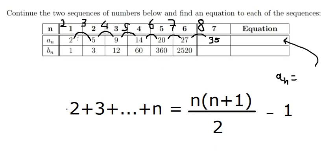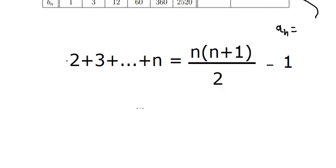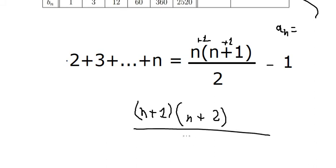But we start at number 1 with value 2, so we change to n plus 1 because we need to add more than one unit. So this becomes n plus 1 times n plus 2 over 2 minus 1. This is the answer for a_n.